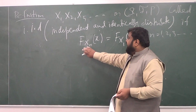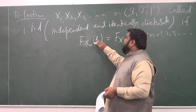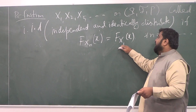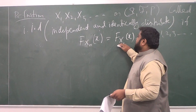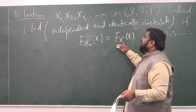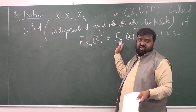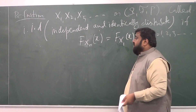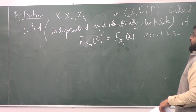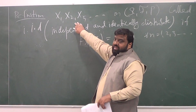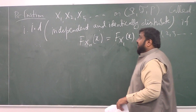The probability of X_n being less than or equal to x is equal to the probability of X_1 less than or equal to x. If their CDFs are equal, then their PDFs would also be equal — we just differentiate on both sides. I am not saying that these are identical to each other, but they follow a similar kind of distribution function. And they are independent.